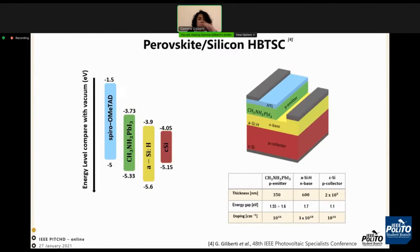Once we solved the model, we have studied the perovskite-silicon solar cell, using as an absorber layer the spiro-OMeTAD material. Then we have the perovskite p-doped emitter. For the base, we have used hydrogenated amorphous silicon, and for the p-doped collector, crystalline silicon material.